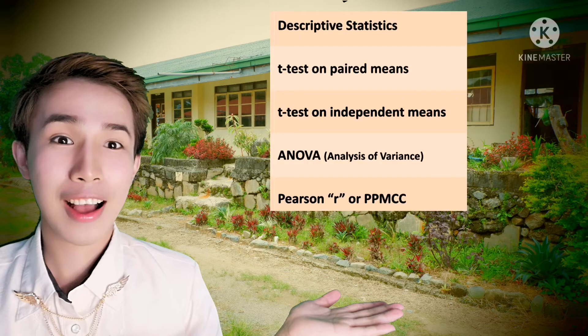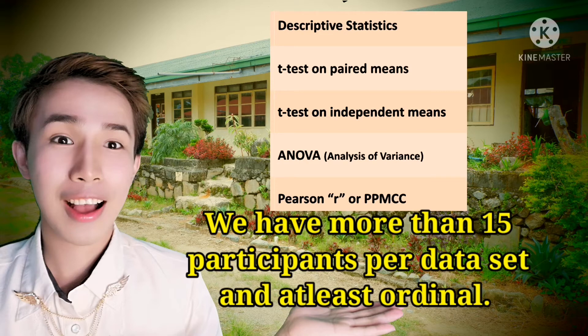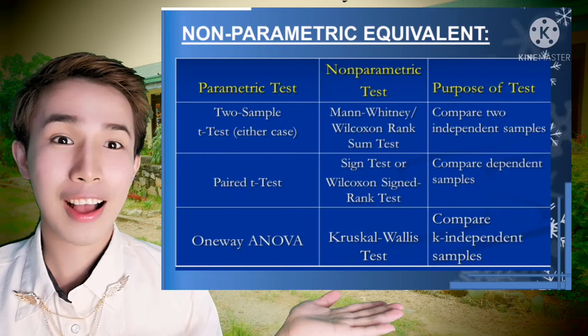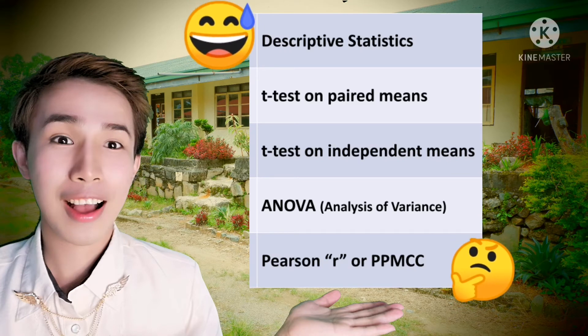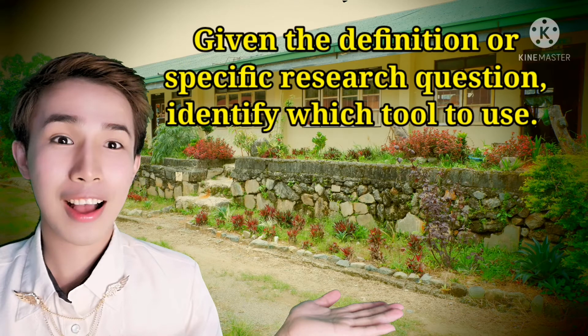By the way, these tools apply provided that we have at least 15 participants per set of data, or at least ordinal level of data. Otherwise, we make use of their non-parametric counterparts, which we will discuss next meeting. Now, let's give the tools a try — given a definition or specific research question, identify which tool to use.